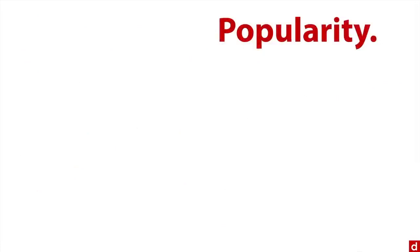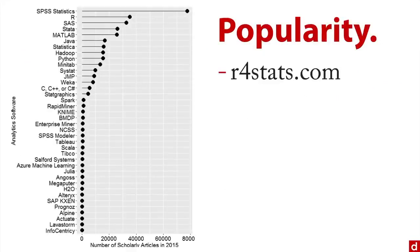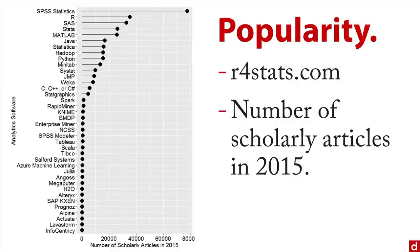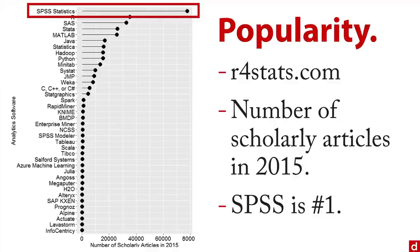One important thing to know is how popular SPSS is. Here's a chart from the excellent website r4stats.com, showing the number of scholarly articles published in 2015 using various statistical packages and languages. Right at the top is SPSS Statistics — SPSS is number one by far in terms of scholarly research.